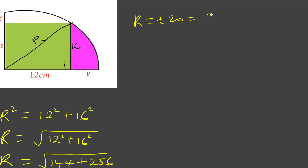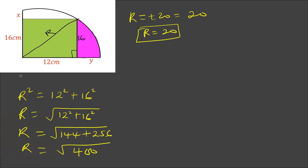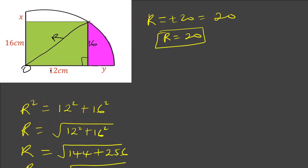So r equals plus or minus 20. But since length cannot be negative, r is 20. So we know the radius is 20. Now, OP equals 12 plus Y. Since OP is a radius and OT is also a radius, their lengths are equal.